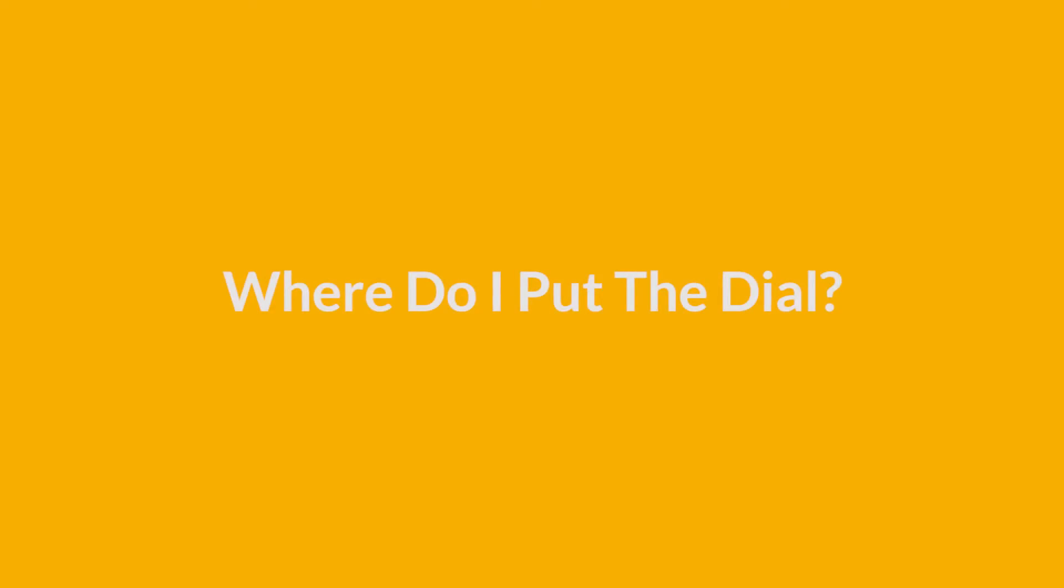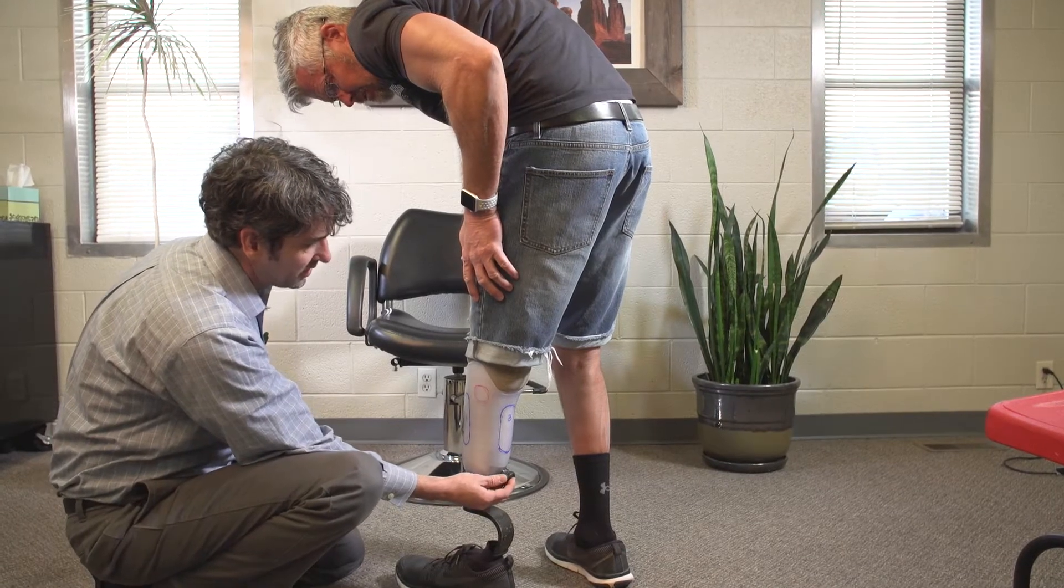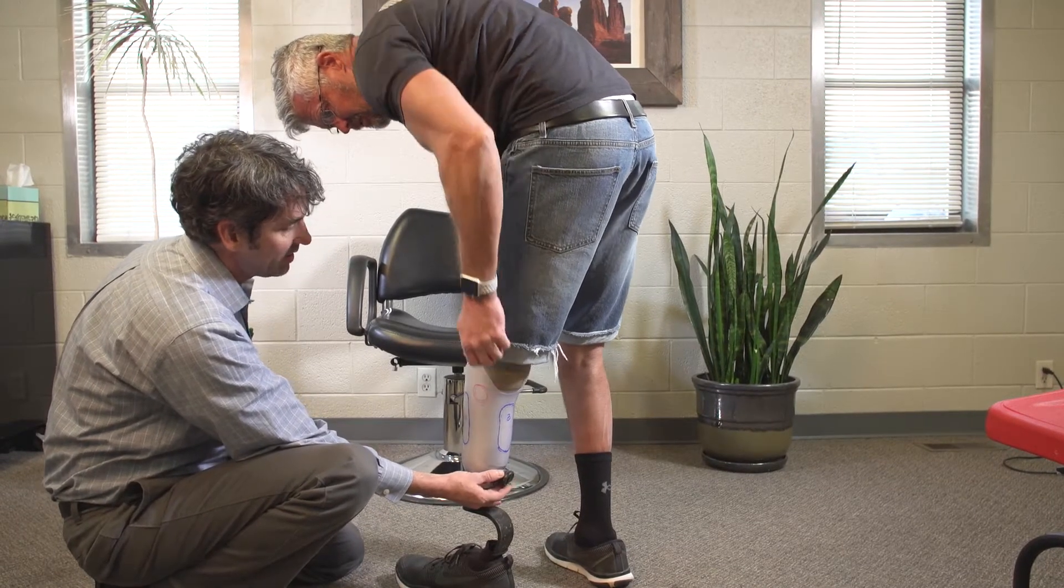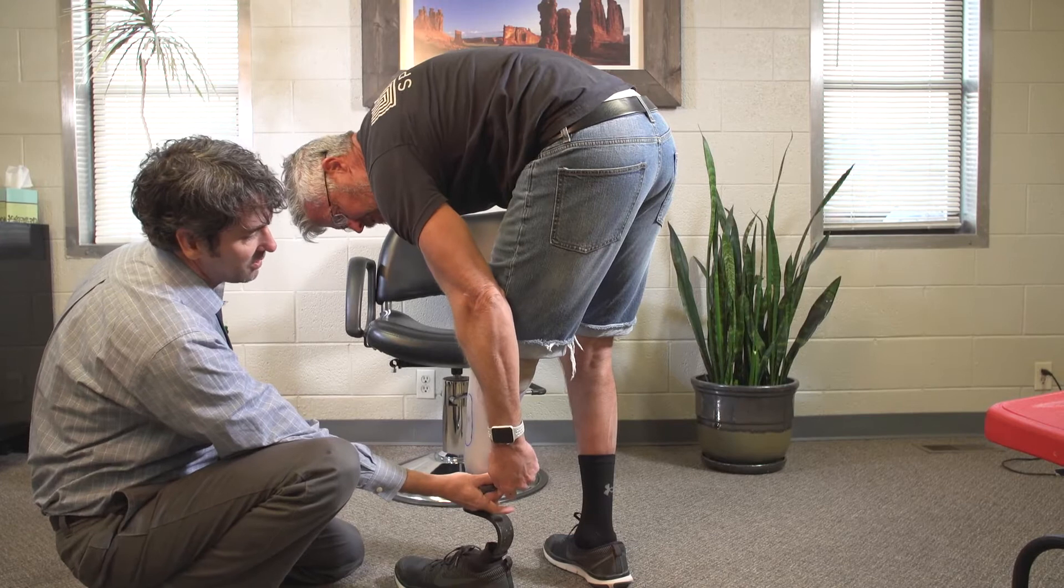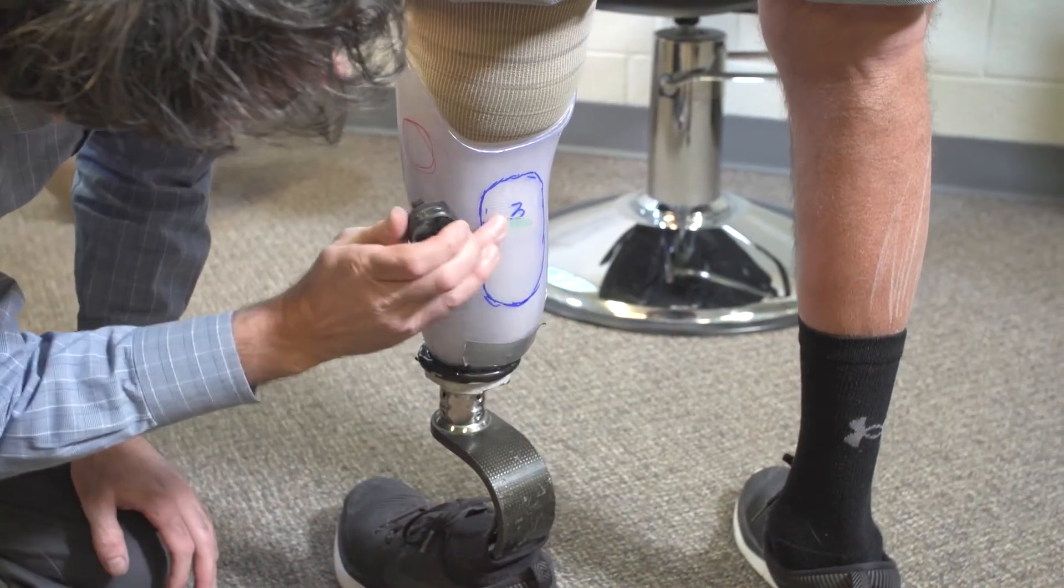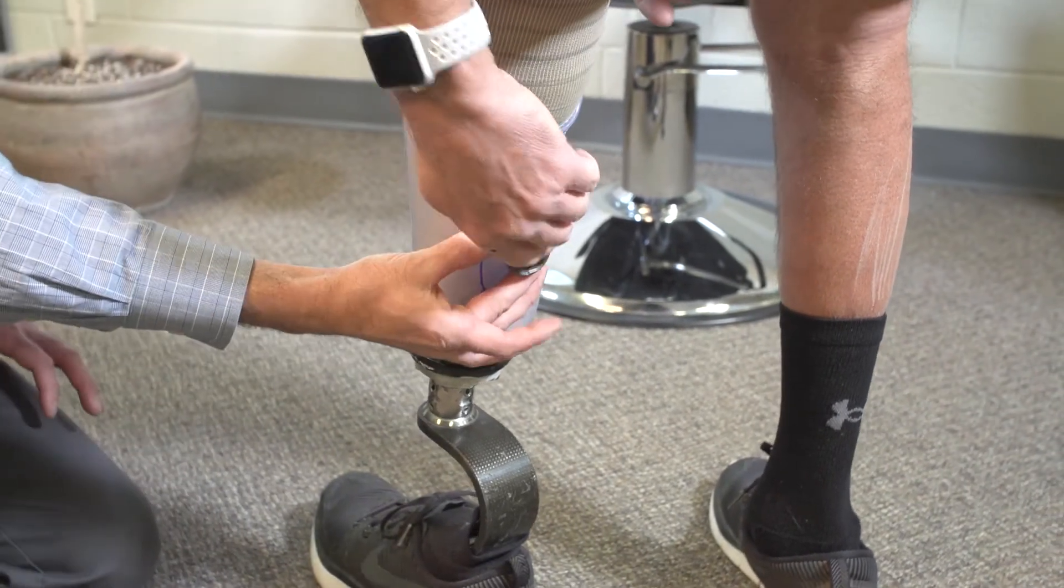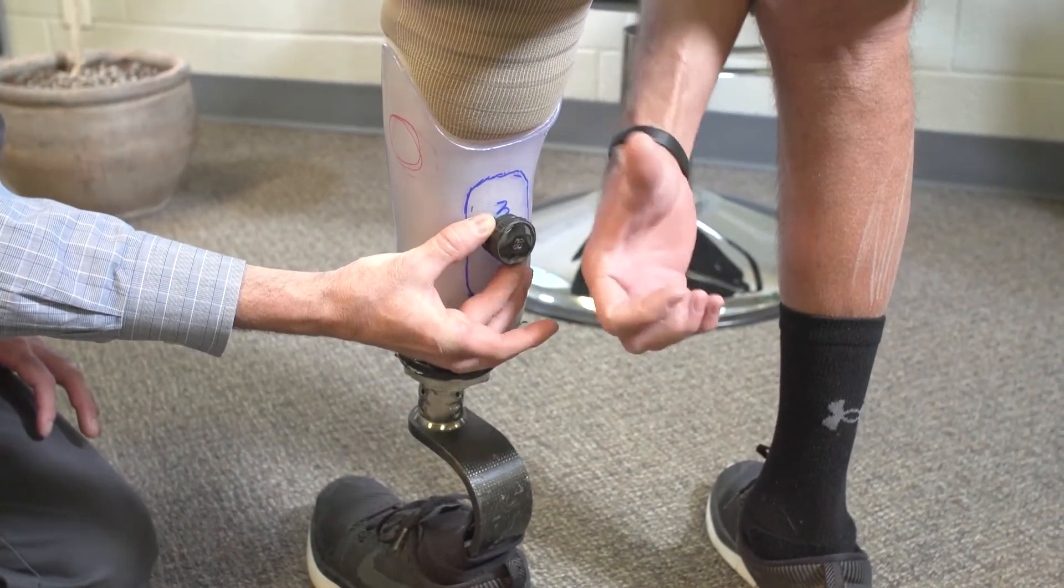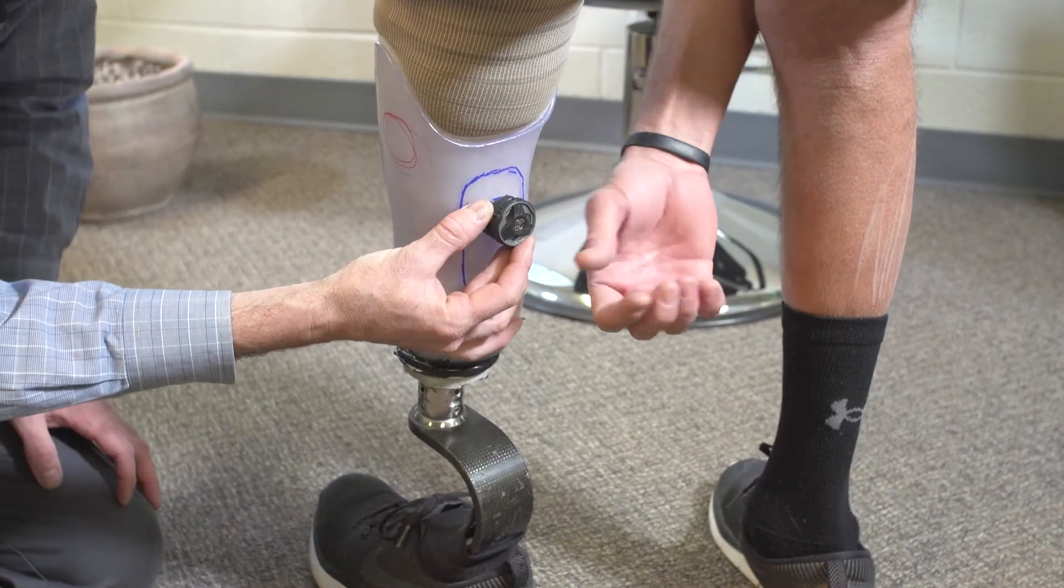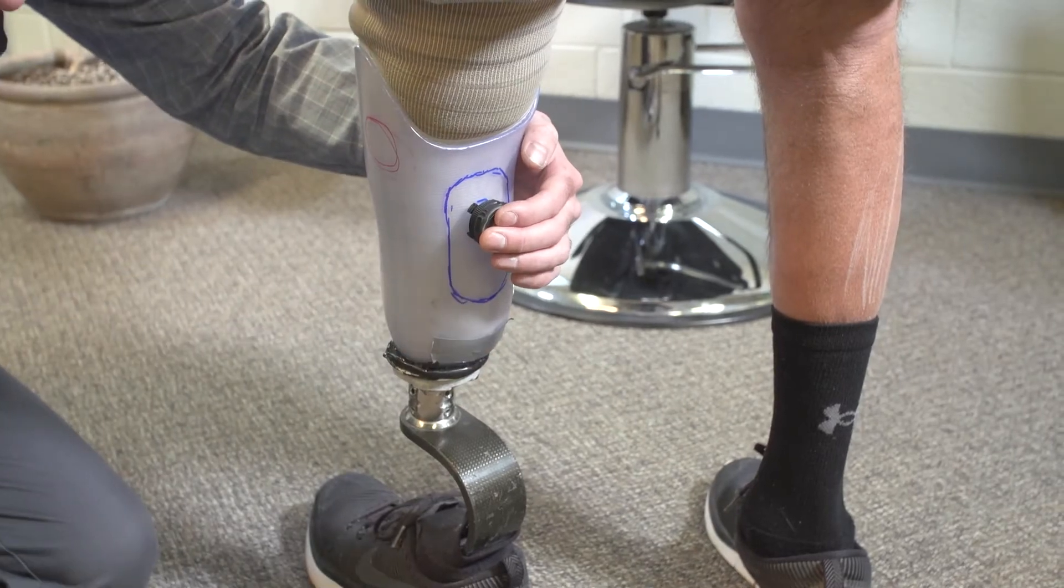Where do I put the dial? Ultimately, dial placement is up to your patient's preference, and it really can go almost anywhere. But for this course, we will put the dial on the posterior panel, along the top lacing pathway. Here, it's easy to access, even through clothing, and the gastroc area responds most efficiently to volume changes when adjusting.